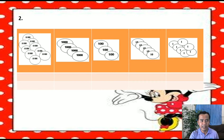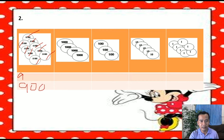Next, let's try this. How many 10,000 do we have? 1, 2, 3, 4, 5, 6, 7, 8, 9 — we have 9 ten-thousands. So that is equivalent to 90,000. How many 1,000 disks do we have? 1, 2, 3, 4 — we have 4. That is 4,000.